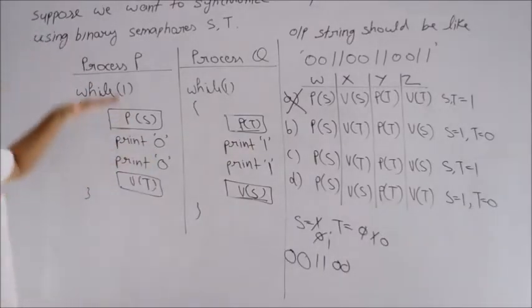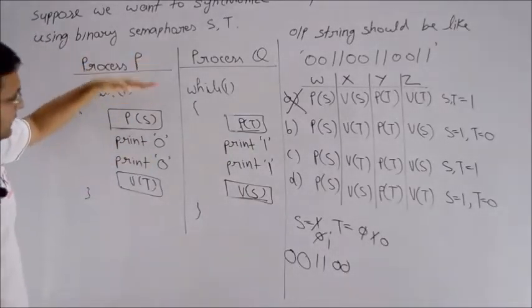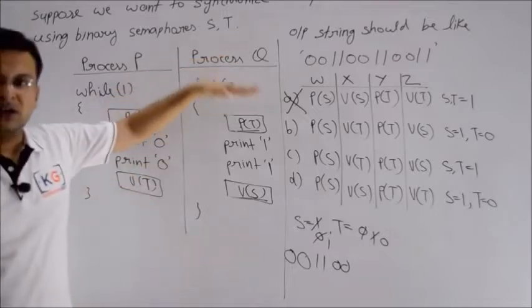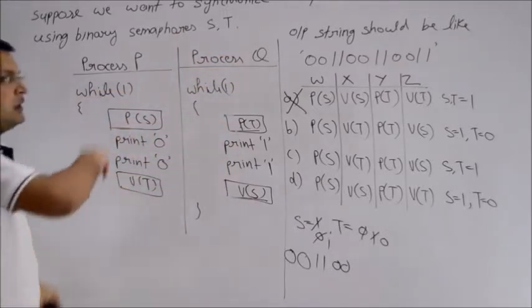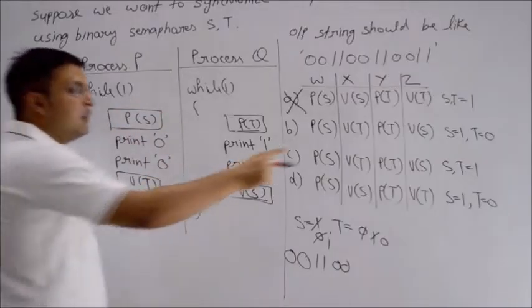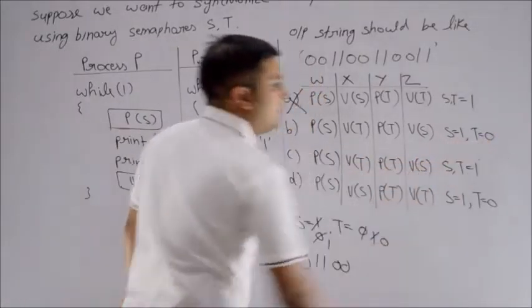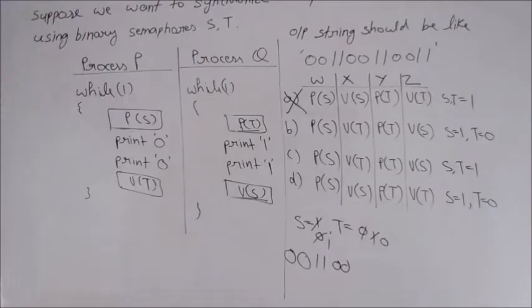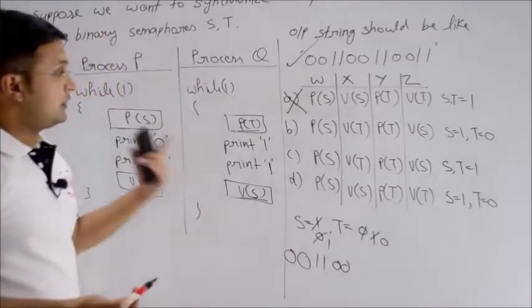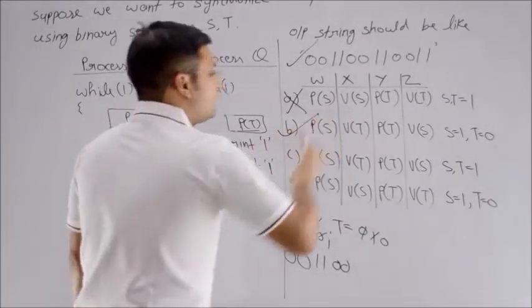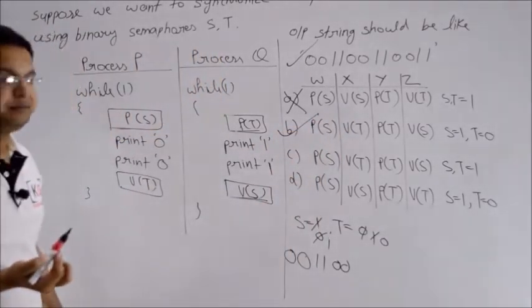Because you've initialized S to 1 and T to 0, whatever you do, you must run P first. This means I'll always get the pattern and a string based on this pattern. The answer B is correct. Now let's try one more question - that is the second part of the previous question. It was a linked question for 4 marks.